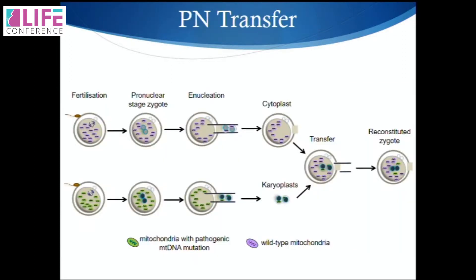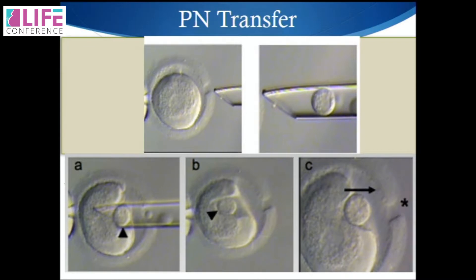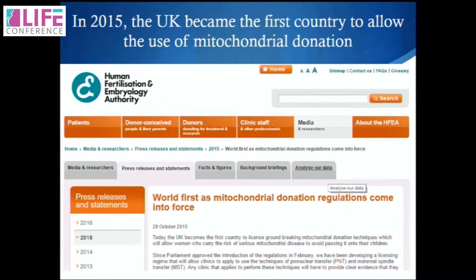Another way is to take out the pronuclei. You fertilise the egg even though it has mutated mitochondria, then when you have the 2PN stage — as soon as you get the two pronuclei — you take them out and reconstitute them into a donor oocyte with good mitochondria. Then you get the embryo and implant it, and you'll have a healthy baby. You need a bigger pipette for this method, so I'd be more cautious because you might get carryover of mutated mitochondria. The HFEA in the UK has actually allowed us to do this — we're the first country doing it. There was public consultation about it, but it is the way forward.